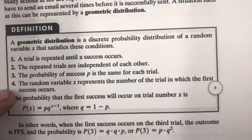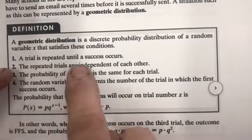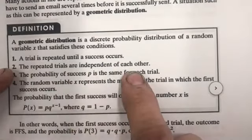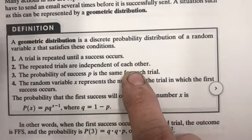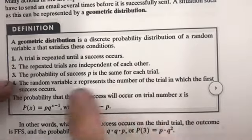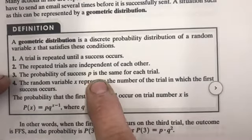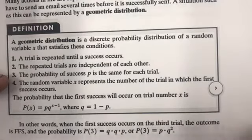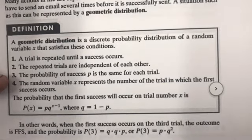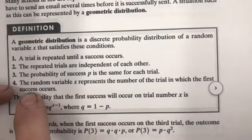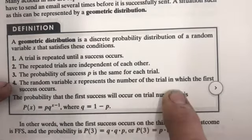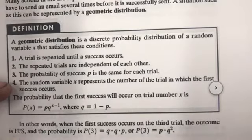Here are the basics of the geometric distribution. Number one: a trial is repeated until a success occurs. Number two: the repeated trials are independent of each other — the first one doesn't affect the second, and so forth. Number three: the probability of success P is the same for each trial. For example, flipping a coin and wanting heads — the probability is the same every time until you get that head.